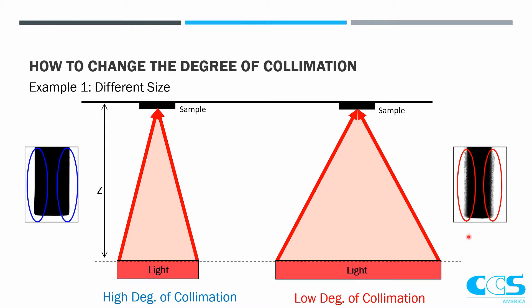Before I mentioned there are ways that we can change the collimation and create a quote fake collimation. One way of doing that is by changing the size of your light. If you have a sample and a fixed working distance, you're getting an image with that wrap around. If we just make that light smaller, we essentially make the angle that the light can hit that sample smaller, and we can start to cut off the light that can wrap around, getting a sharper image.